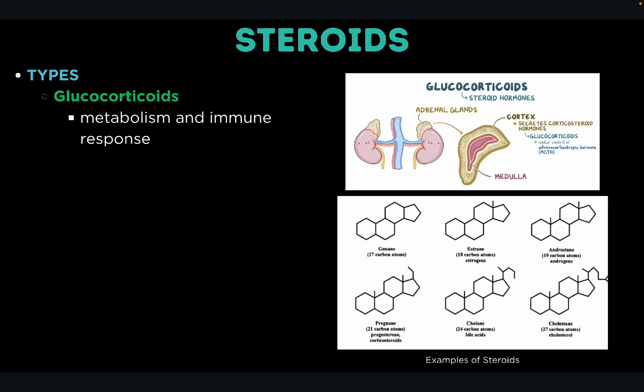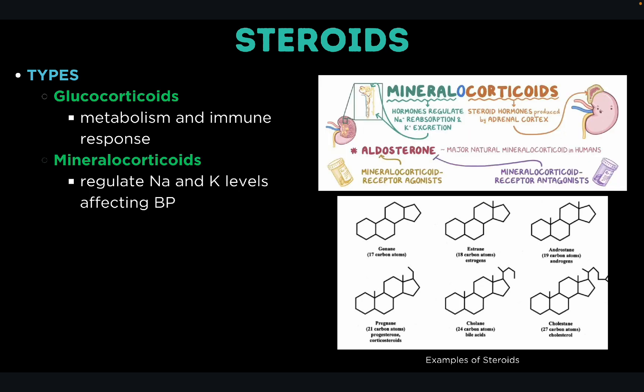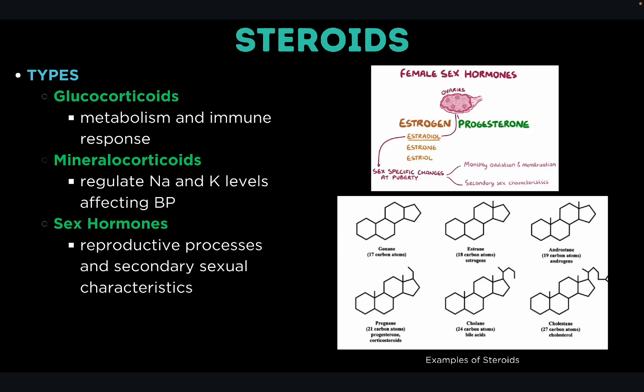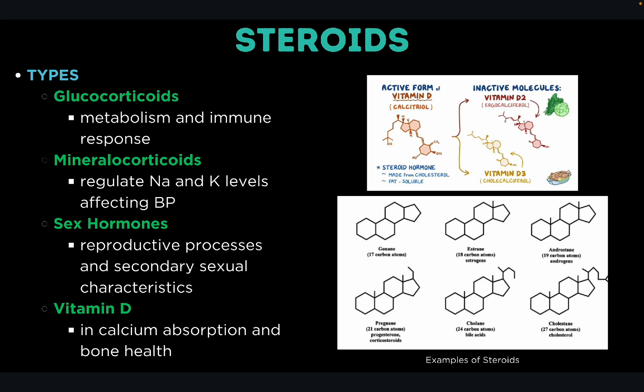There are different types of steroids. Glucocorticoids, such as cortisol, are involved in metabolism and immune response. Mineralocorticoids, such as aldosterone, regulate sodium and potassium levels affecting blood pressure. Sex hormones such as testosterone and estrogen are involved in reproductive processes and secondary sexual characteristics. Finally, vitamin D is a steroid involved in calcium absorption and bone health.